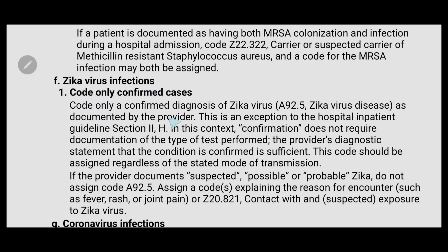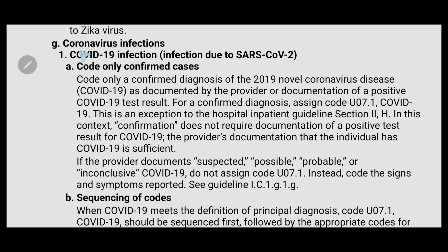For Zika virus infection, code only confirmed cases. A92.5 is the code for Zika virus disease. If the provider documents terms such as suspected, possible, or probable Zika, do not code A92.5. In such cases, assign a code explaining the reason for the encounter.